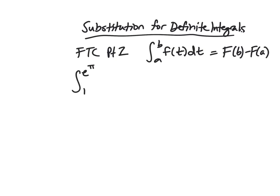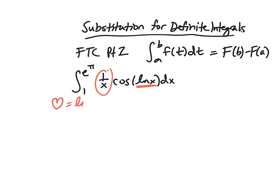Let's look at an example. Say we have the integral from 1 to e to the pi of (1 over x) times cosine of the natural log of x. We do have an inside function: cosine has the natural log inside it, and we're also seeing its derivative, 1 over x, showing up. So right away we should be thinking this is substitution. I'm going to call my inside function 'heart,' equal to the natural log of x, so d-heart is 1 over x dx.